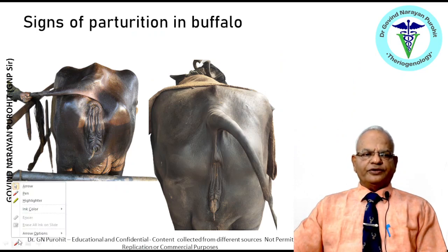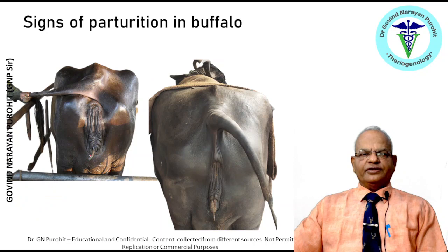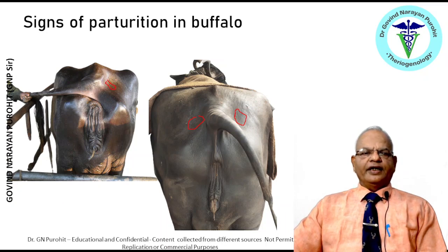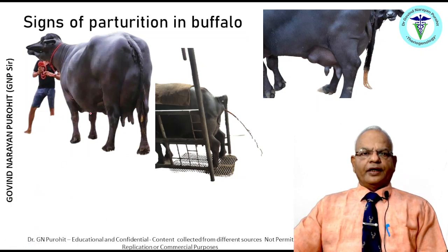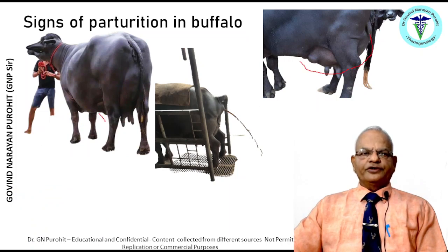Signs of parturition in the buffalo: from mid to late gestation a buffalo gives some degree of discharge, and nearing parturition there will be relaxation of the sacrosciaticligaments — visible as a dip — indicating the buffalo is near parturition. Other signs include development of the udder, which becomes fully developed, and some parturient buffaloes may show slight diarrhea.